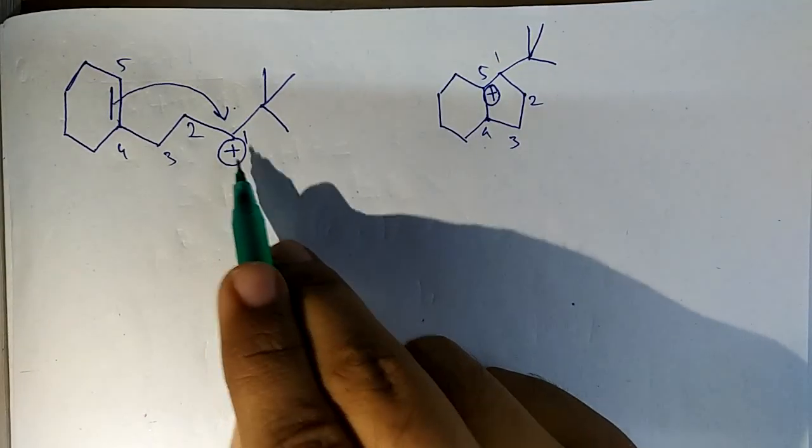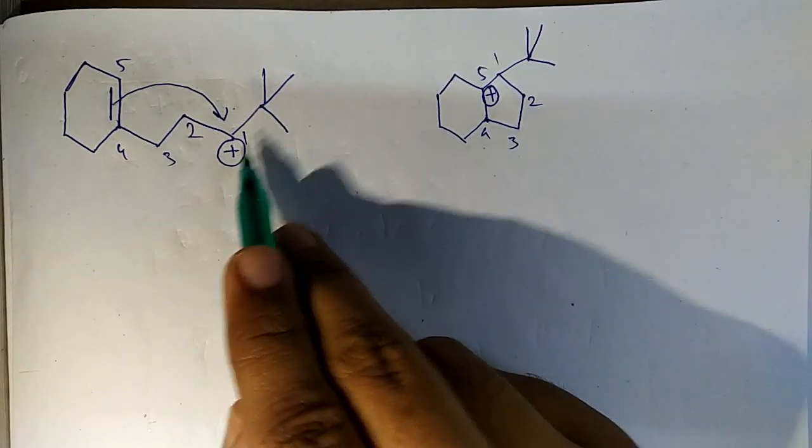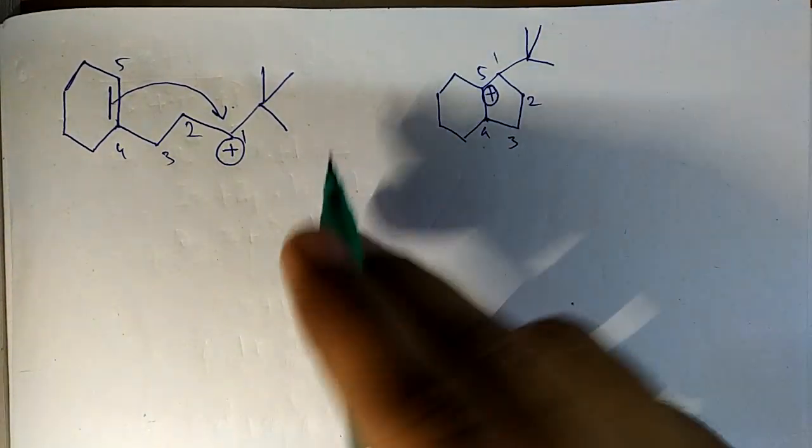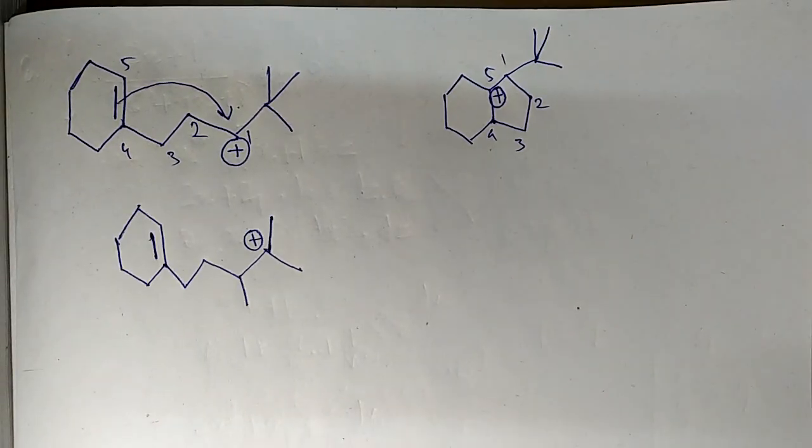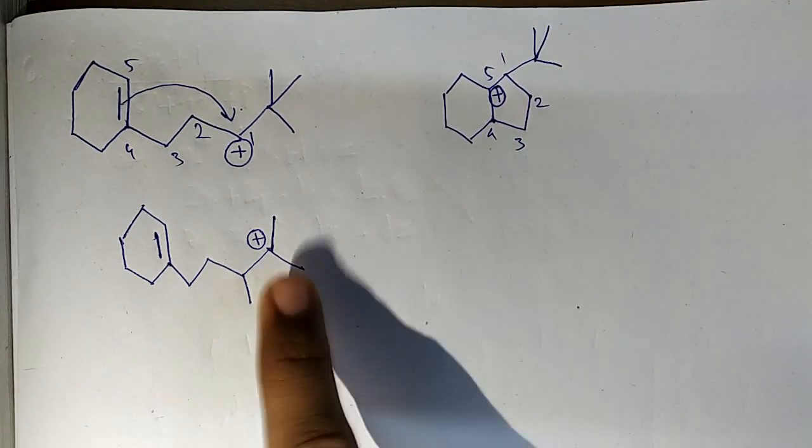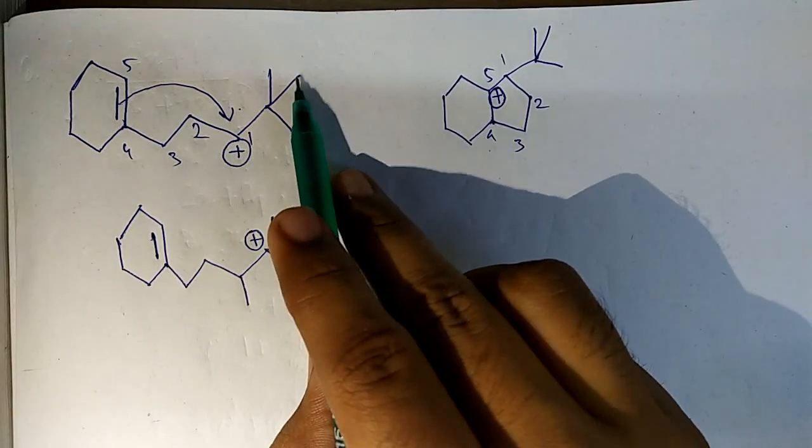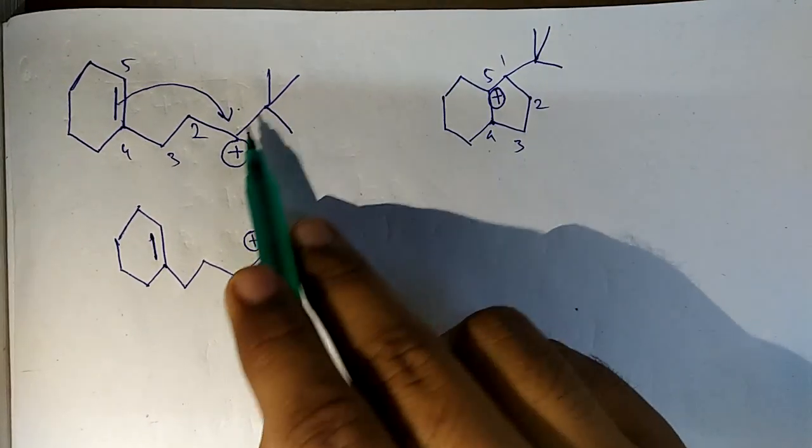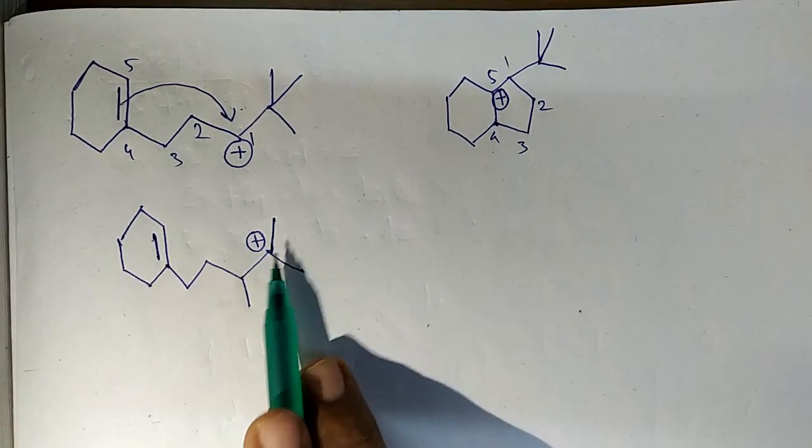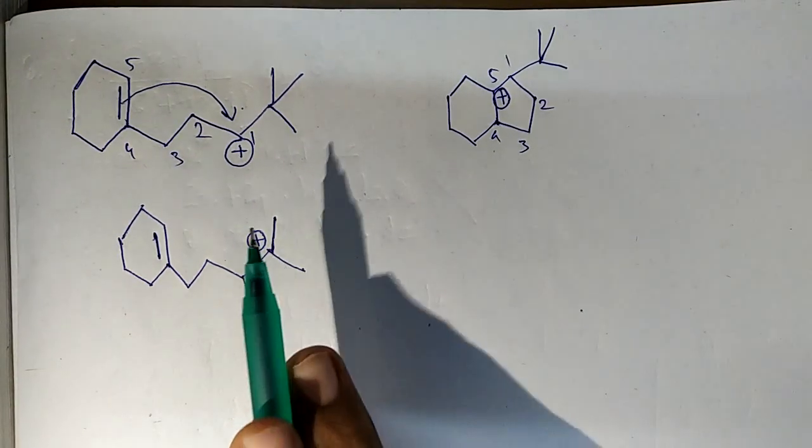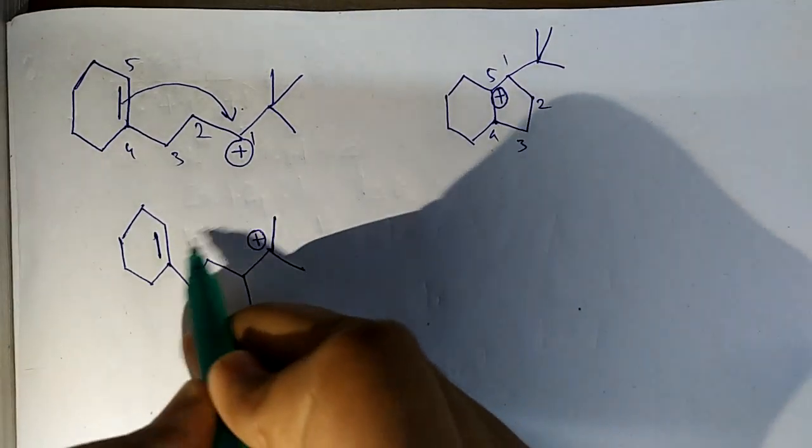If we do carbocation rearrangement, this compound will be formed. Simply this methyl group will be shifted to this carbon and carbocation jumps to here. Now this is a three degree carbocation and this is much more stable.